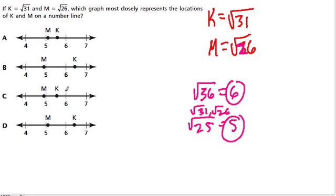There's only one picture here that has that happening, and that's choice A. The two plots are between 5 and 6.